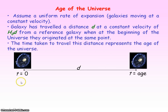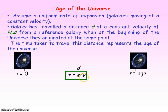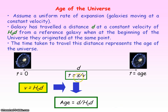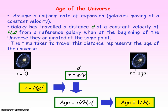The time taken for this galaxy to travel distance d represents the age of the universe. Time equals distance divided by speed, and the speed is given by Hubble's law. Substituting in, the age of the universe equals d divided by H₀d — the distance cancels — so the age of the universe equals 1 divided by Hubble's constant.